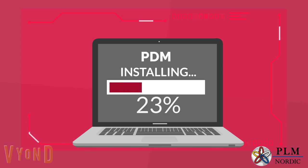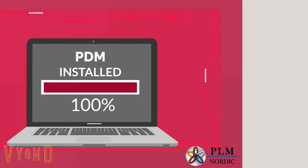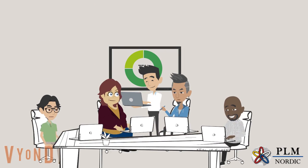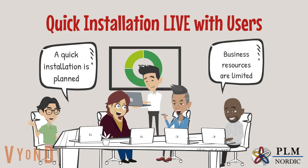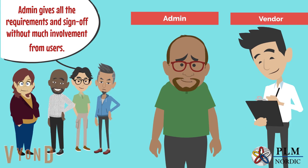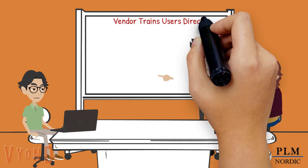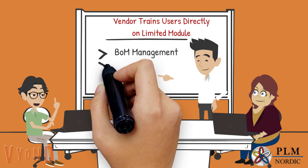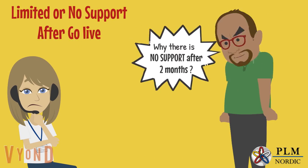A quick PDM is fast and easy to install without much implementation cost. A quick installation is planned with live users on system in one to two weeks. Business resources are limited. Admin gives all the requirements and sign off without much involvement from users. Vendor trains users directly on limited modules. There is very limited or no support after go-live.